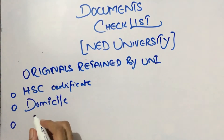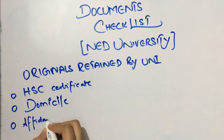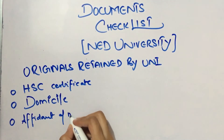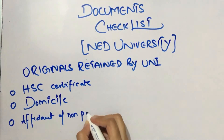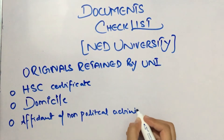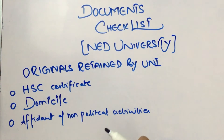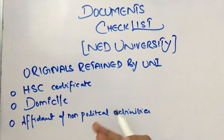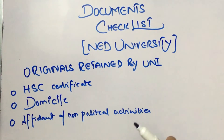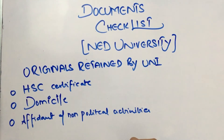The second document is the Affidavit of Non-Political Activities. This is a format you will submit stating that you will not participate in any political activities at the university. Otherwise, your admission can be cancelled. After that, you will need photographs.